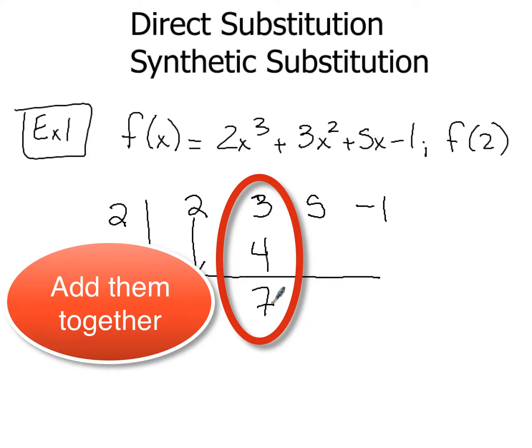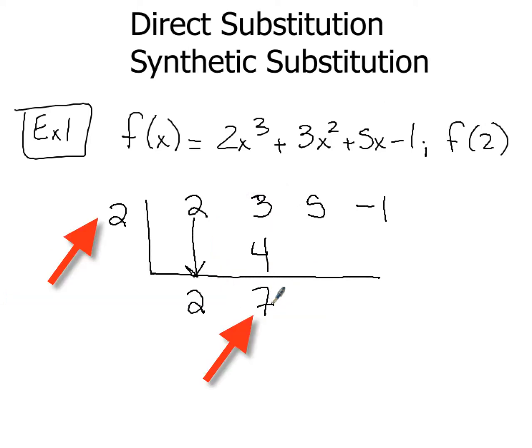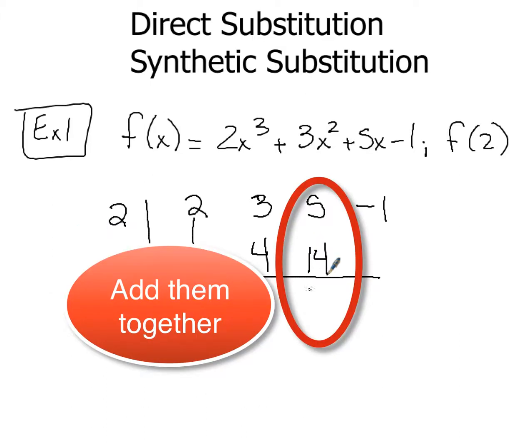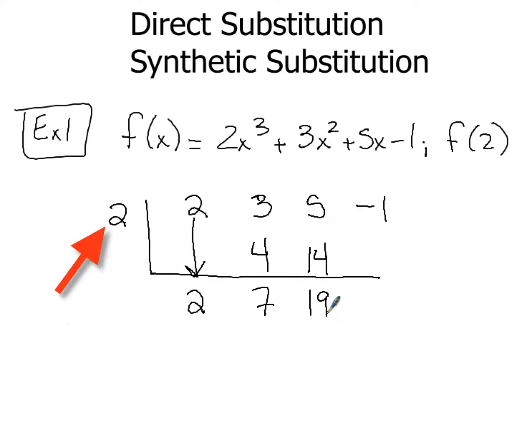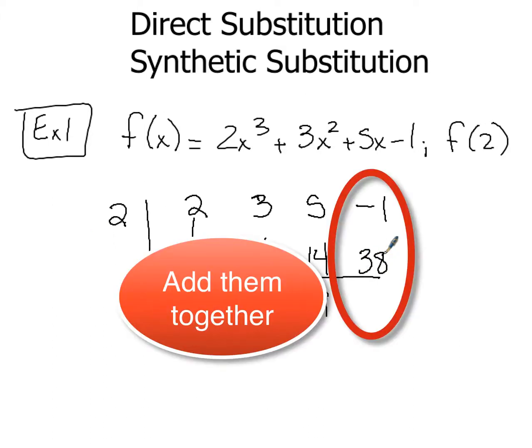Next thing I'm going to do is multiply 2 times 7 and I'm going to put that result here, 14. Add them up, 5 + 14, I get 19, no big deal. Again, multiply 2 times 19, that's 38, put your result there, add them up, -1 + 38, you get 37.